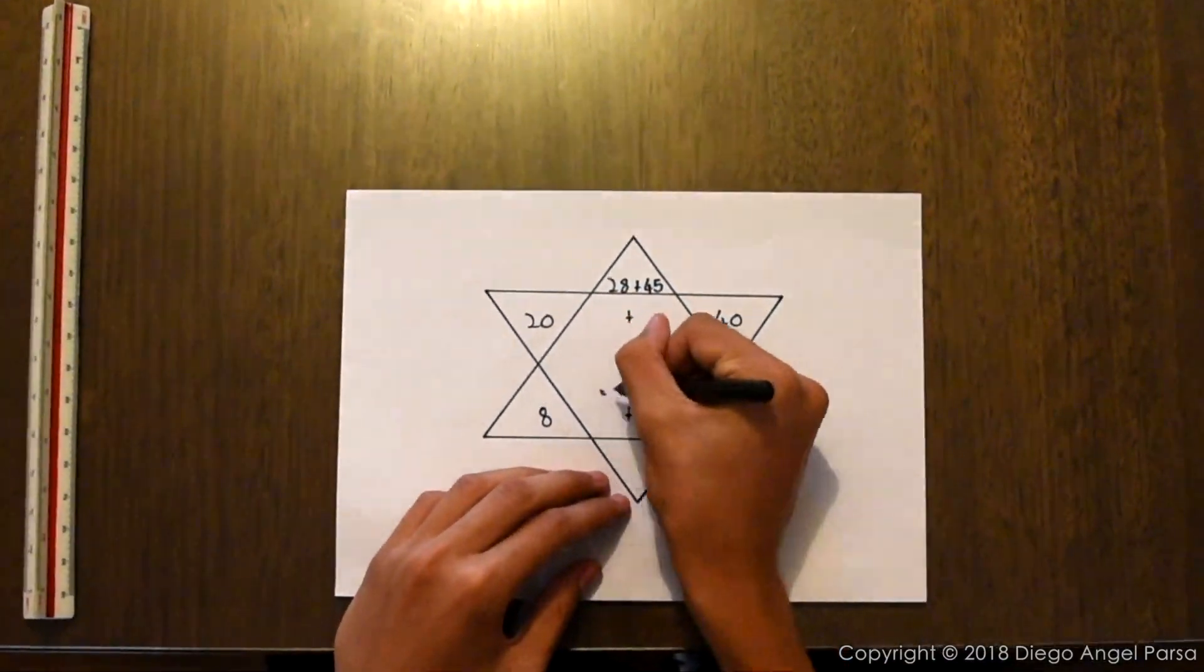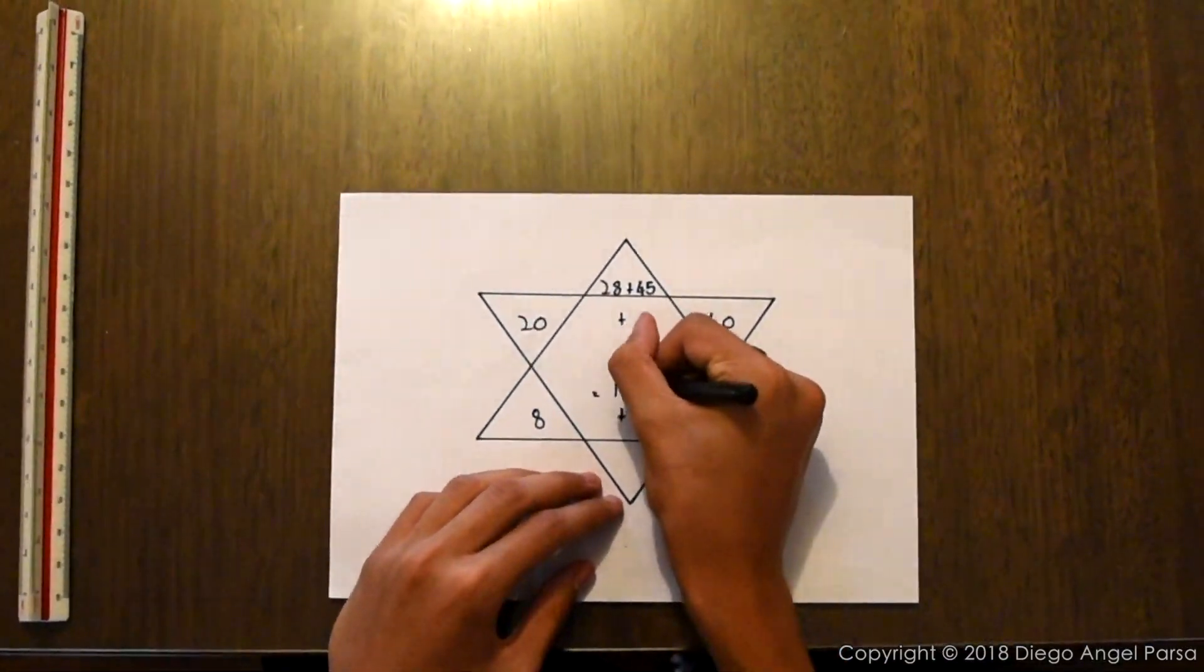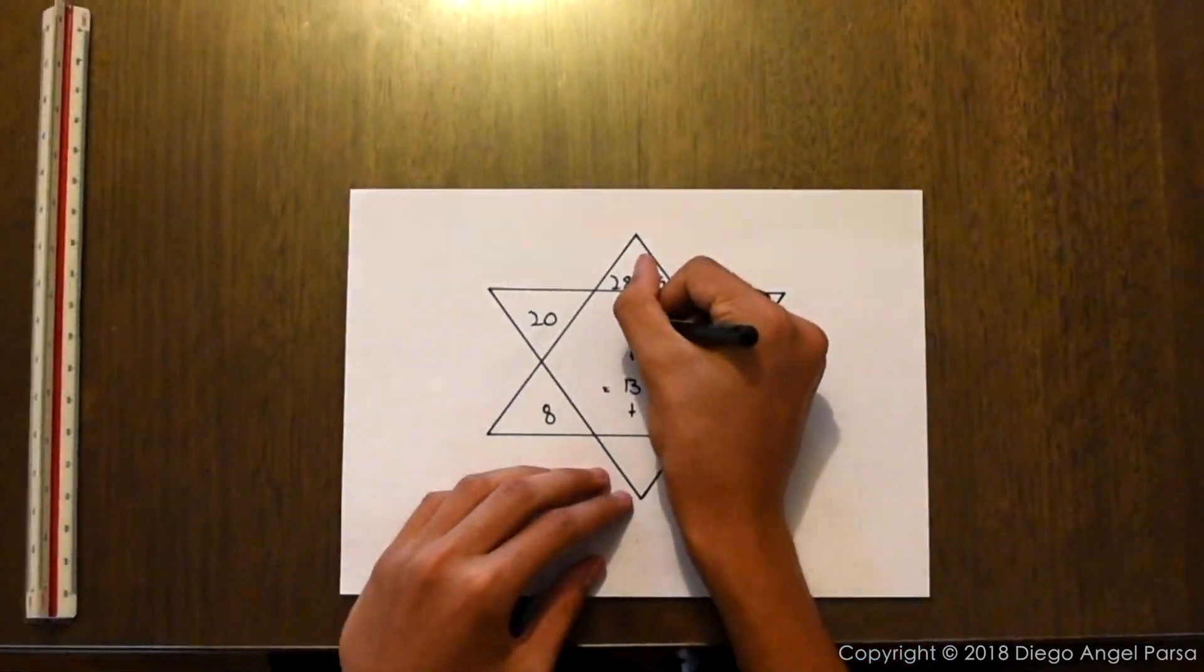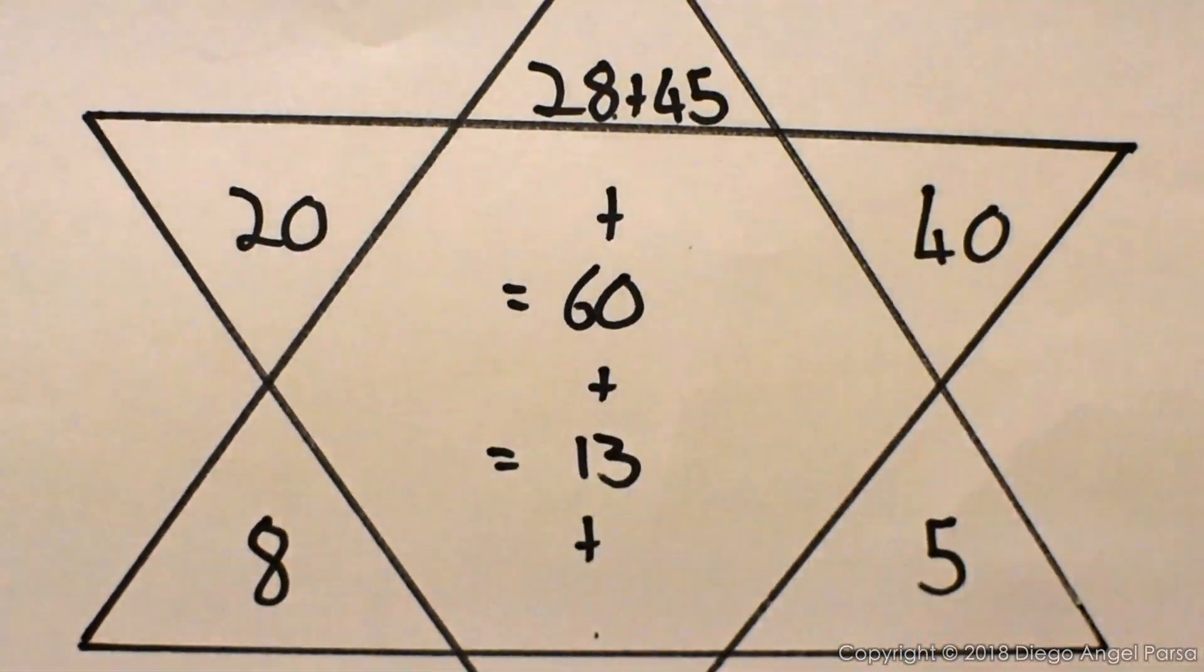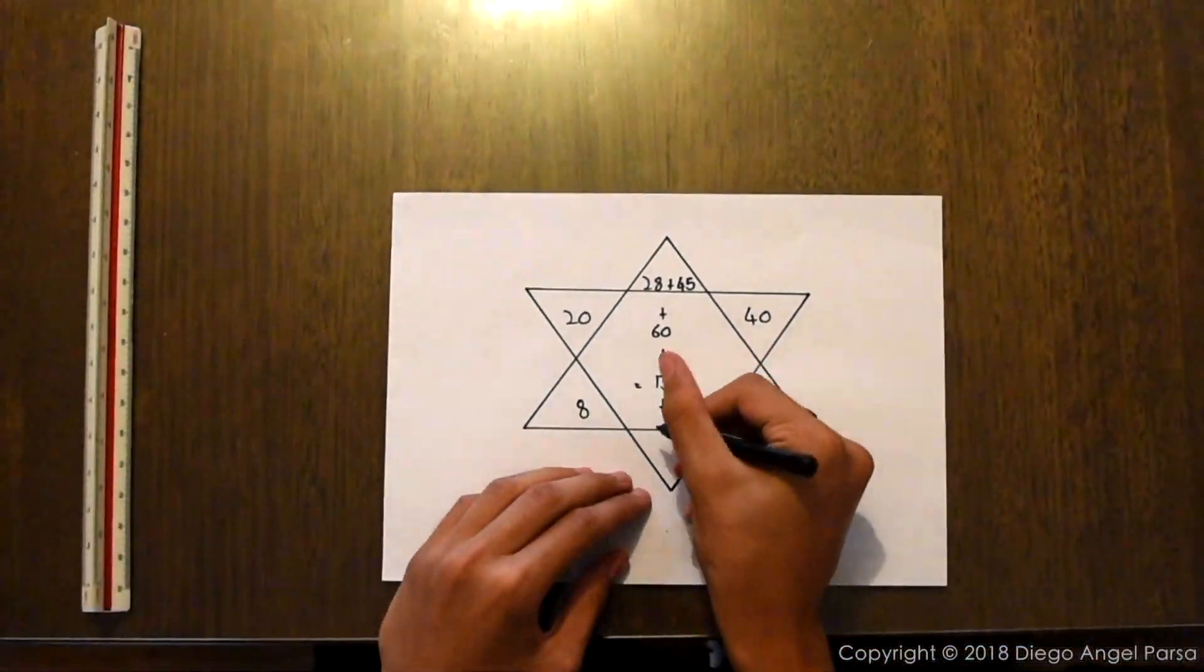Now you add the tens together and the units together. So 8 plus 5 equals 13 and 20 plus 40 equals 60. Then you add the two results together to get the answer.